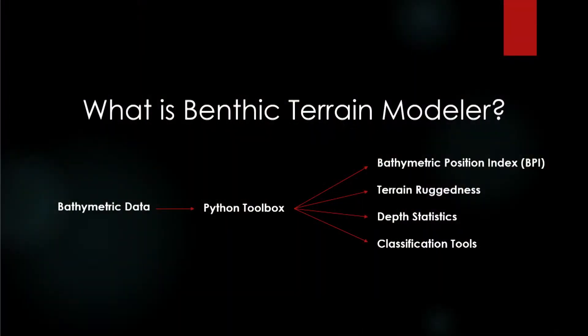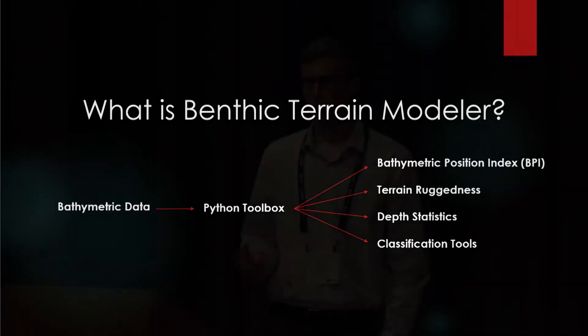For those of you who are not familiar with BTM, it's a Python toolbox and add-in for ArcGIS for desktop. What it does is it takes your bathymetry data and creates result rasters from that data for a variety of metrics to help you better understand the benthic environment. Some tools that have been in BTM for a long time are bathymetric position index (BPI), terrain ruggedness, and depth statistics like mean, variance, and standard deviation. BTM also comes with a host of classification tools where you can use all of these metrics to create your own habitat classification schemes and really identify patterns in your terrain data.